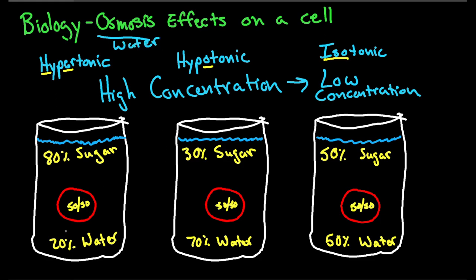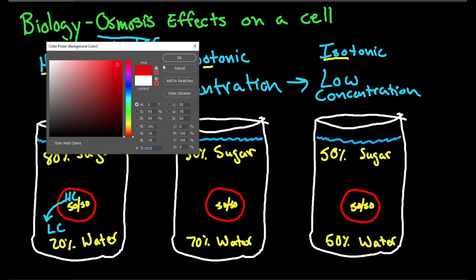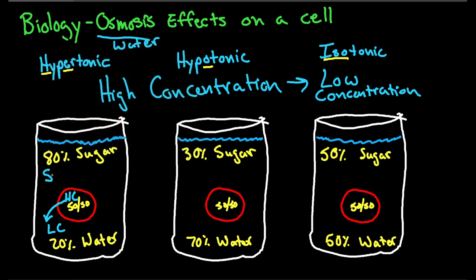Looking at the hypertonic solution, we have 20% water outside — that's pretty low concentration. Inside the cell it's 50%, so it's a higher concentration. Water flows from high to low, meaning water is going to leave the cell, pass through the cell membrane, and go out into the solution. Taking water out of the cell is going to cause it to shrink.